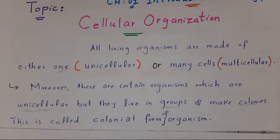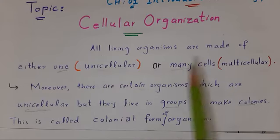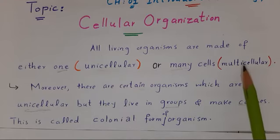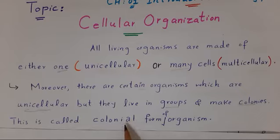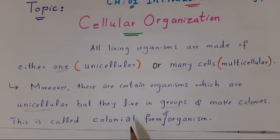So it means that there are three types of organisms: unicellular organisms, which are made of only one cell; multicellular organisms, which are made up of many cells; and colonial organisms, which are unicellular but they live in groups and make colonies — they are called colonial organisms.